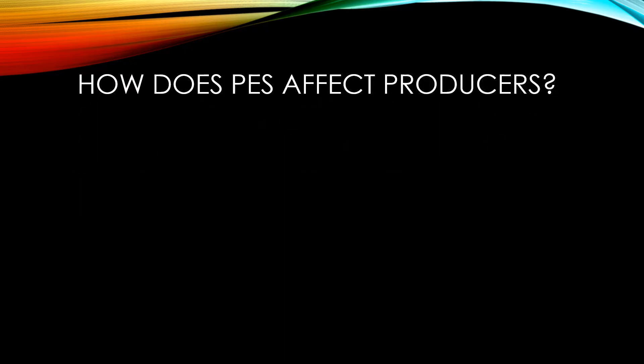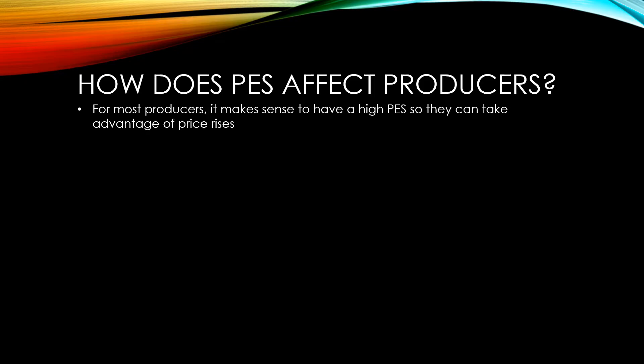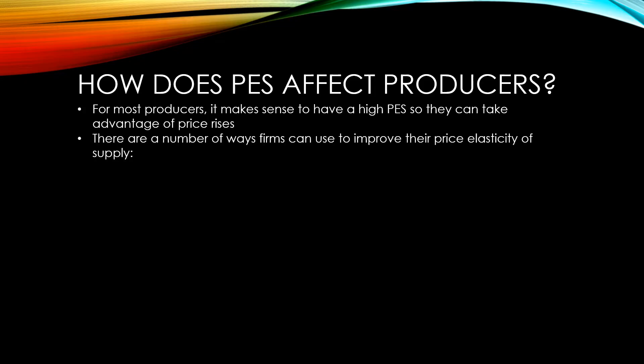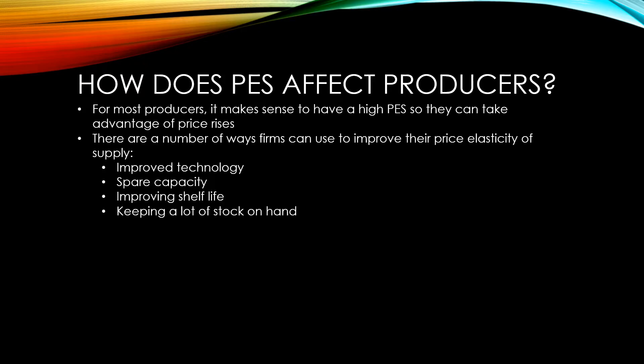For most producers, it makes sense to have a high price elasticity of supply so that they can take advantage of price rises. There are a number of ways firms can use to improve their price elasticity of supply. These include improved technology, spare capacity, improving shelf life, keeping a lot of stock on hand, and improving worker flexibility.